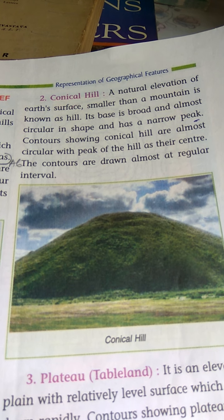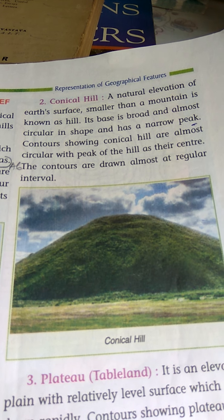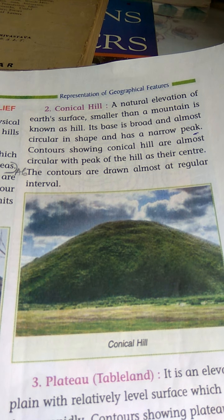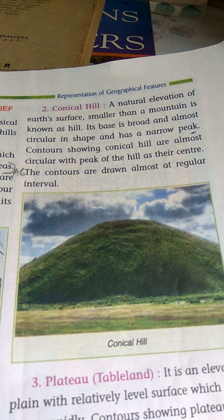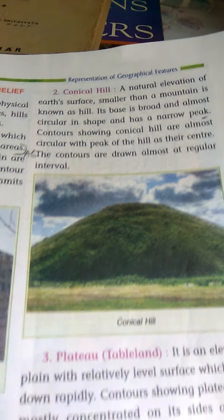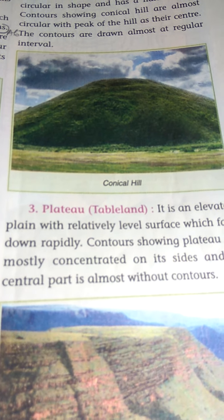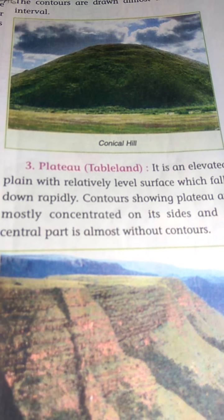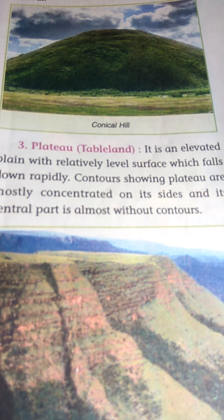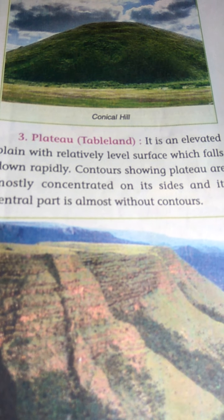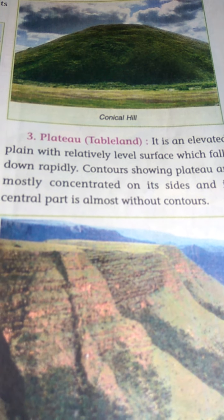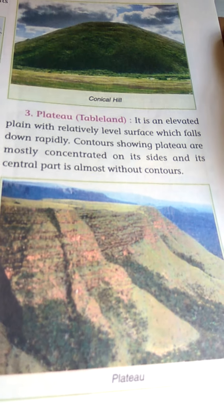A conical hill's base is broad and almost circular in shape, and has a narrow peak. That is the diagram. Next one is plateau, also known as tablelands. It is an elevated plane with a relatively level surface which falls down rapidly. That diagram is given.